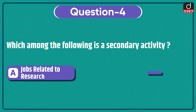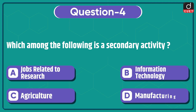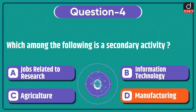Next question: which among the following is a secondary activity — jobs related to research and information technology, agriculture, or manufacturing? The correct answer is option D, manufacturing.